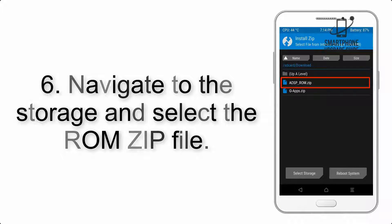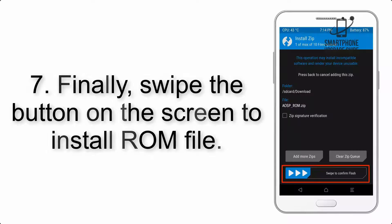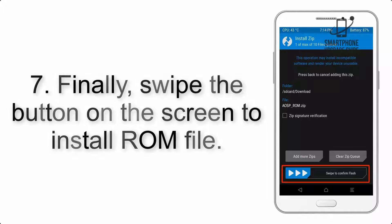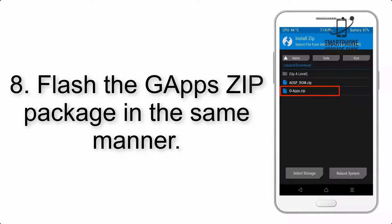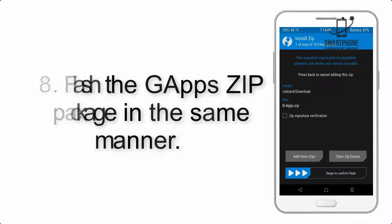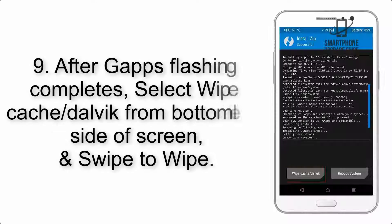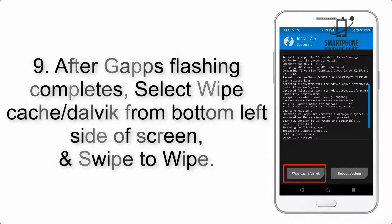Step 5: Go back to the recovery main screen and tap on the Install button. Step 6: Navigate to the storage and select the ROM zip file. Step 7: Swipe the button on the screen to install the ROM file. Step 8: Flash the GApps zip package in the same manner.